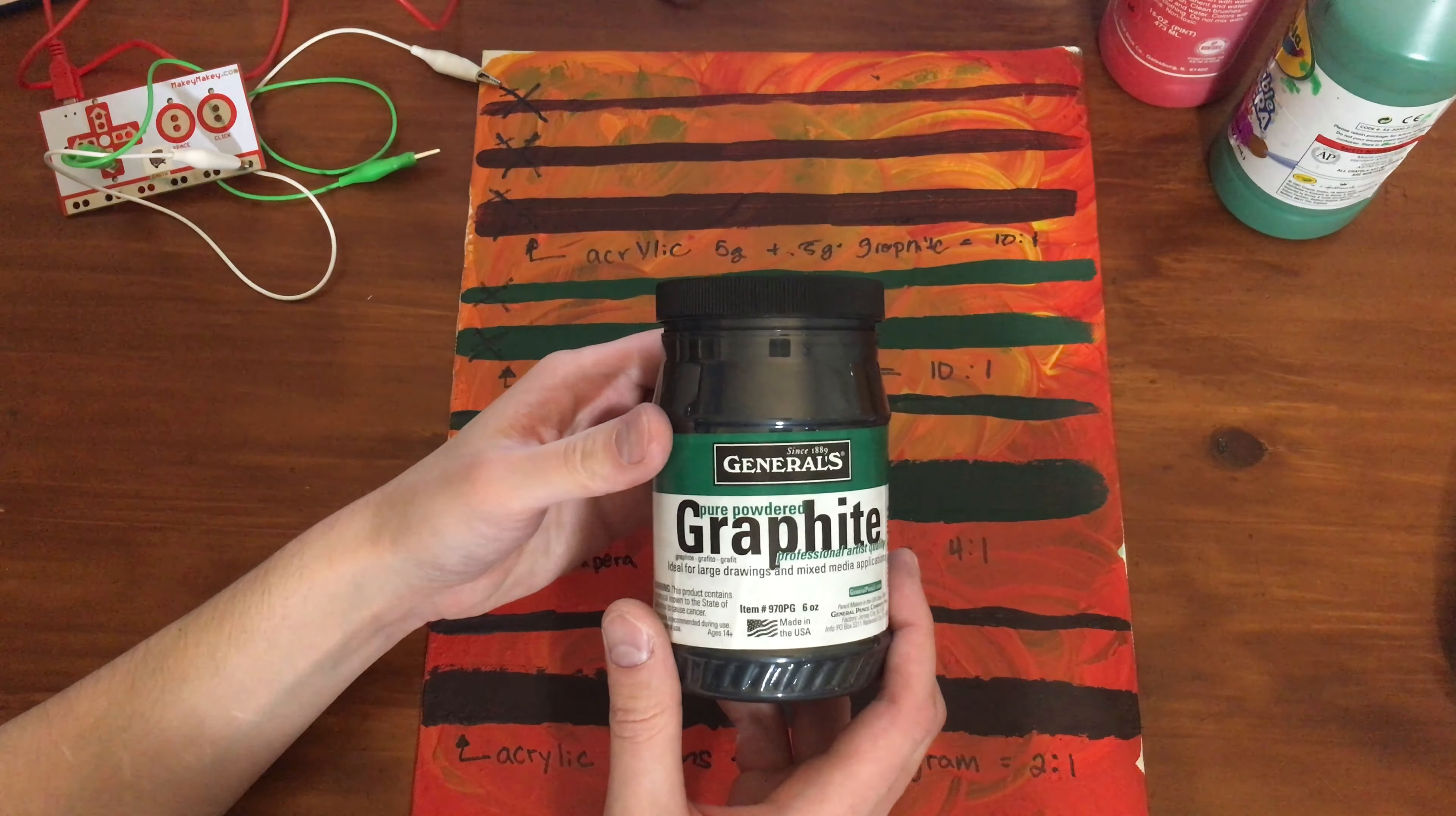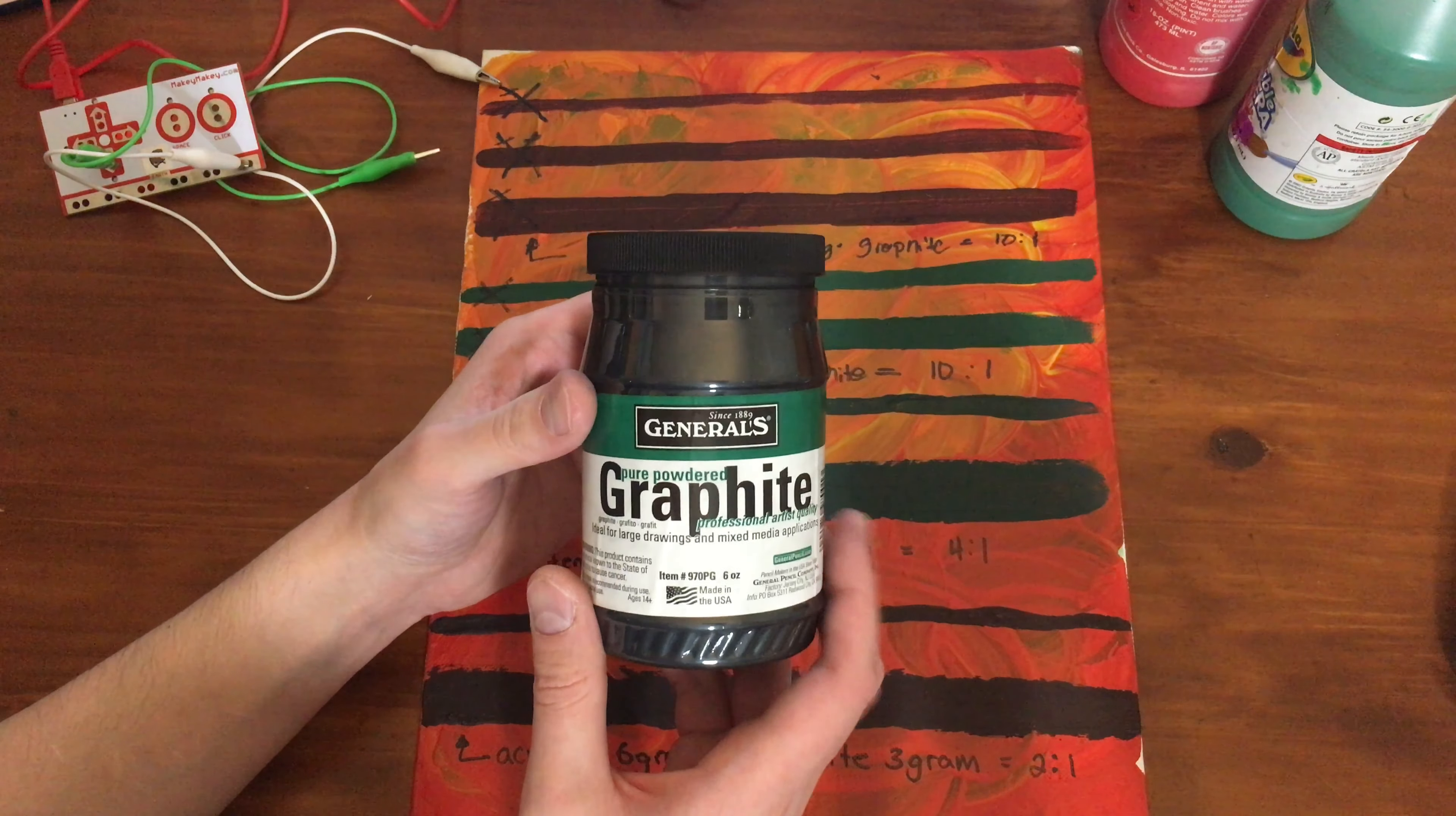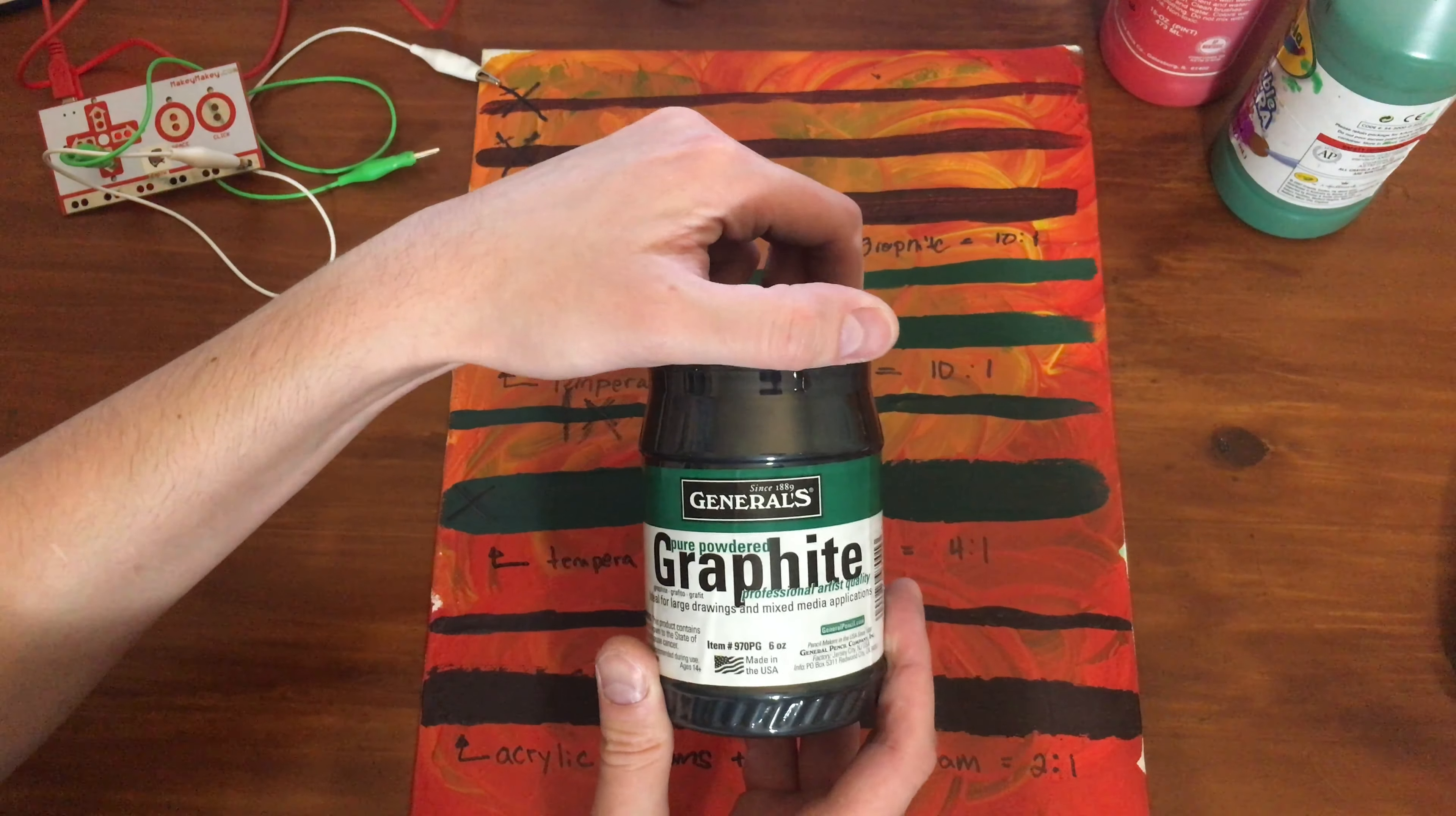The biggest ingredient is always the graphite. Graphite is conductive when you have enough of it, and it's what they use in the manufactured conductive paints.